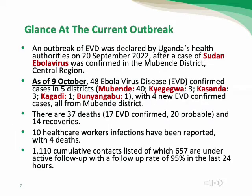Looking at the current situation: an outbreak of Ebola virus disease was declared by Uganda's health authorities in September 2022 after a Sudan strain Ebola virus case was confirmed in the Mubende district in central Uganda. Based on CDC statistics up to October 9th, there were 48 confirmed cases across five districts — Mubende with 40 cases, Kagadi with 3, Kassanda with 3, Kagadi with 1, and Bunyangabu with 1 — including four new confirmed cases, all from Mubende district.